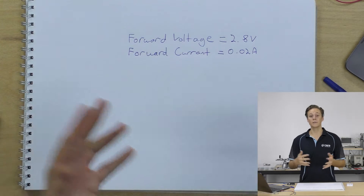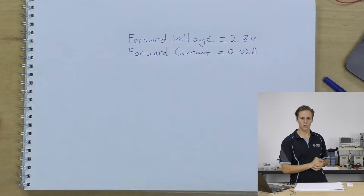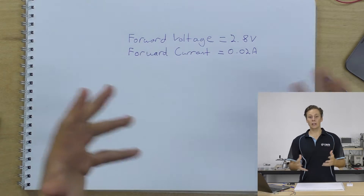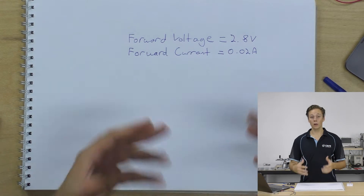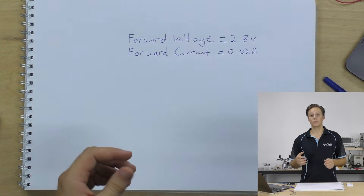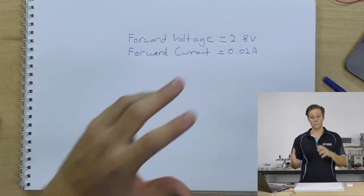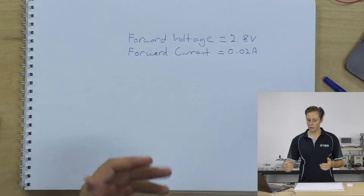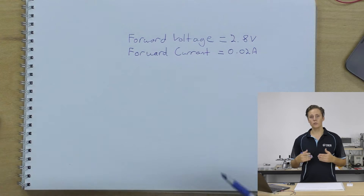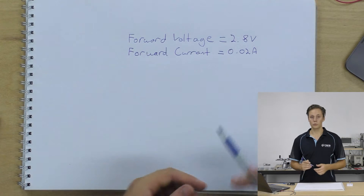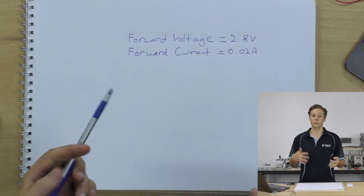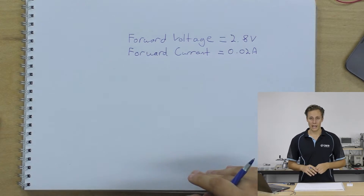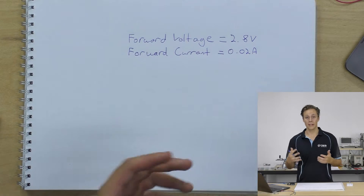So how do we limit this current? We use resistors. Resistors resist the flow of current — they're a resistive load, which means you will experience a voltage drop across them, and they control the amount of current allowed to flow through the circuit. We can use those to control the current and also drop the remainder of the voltage.